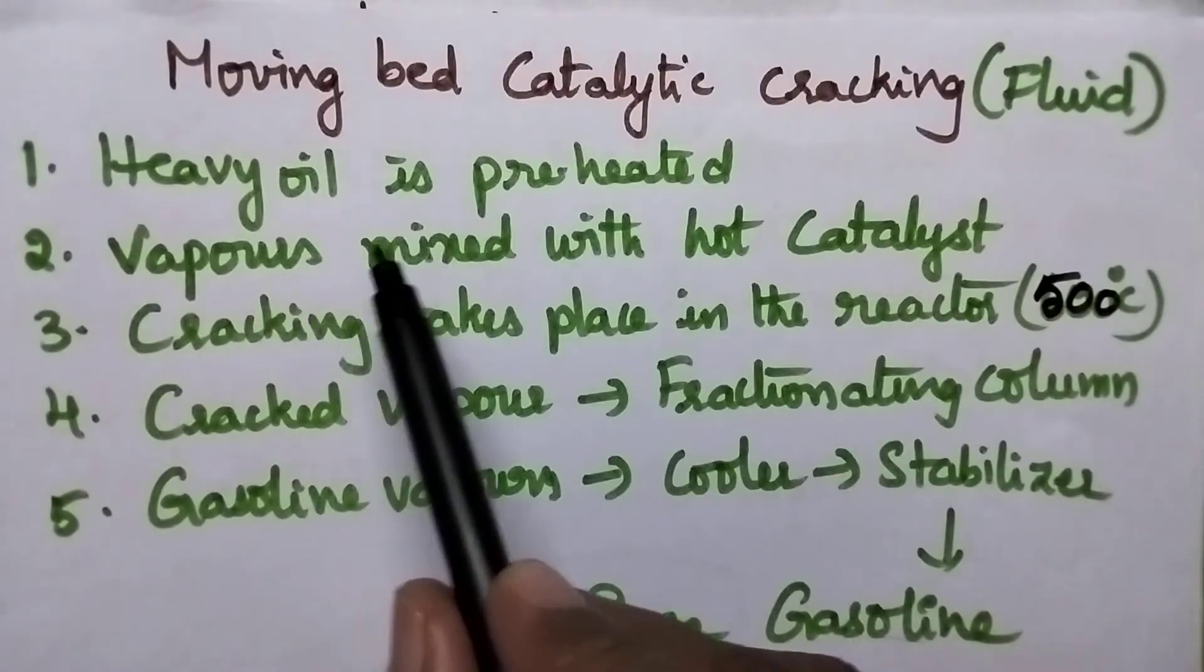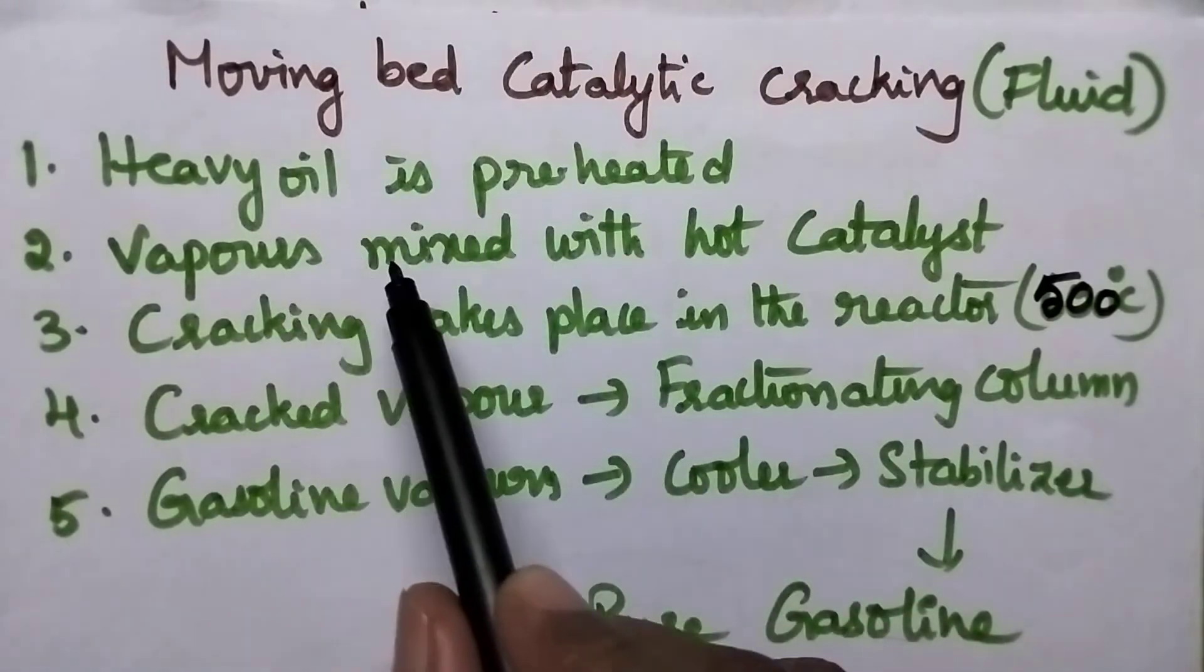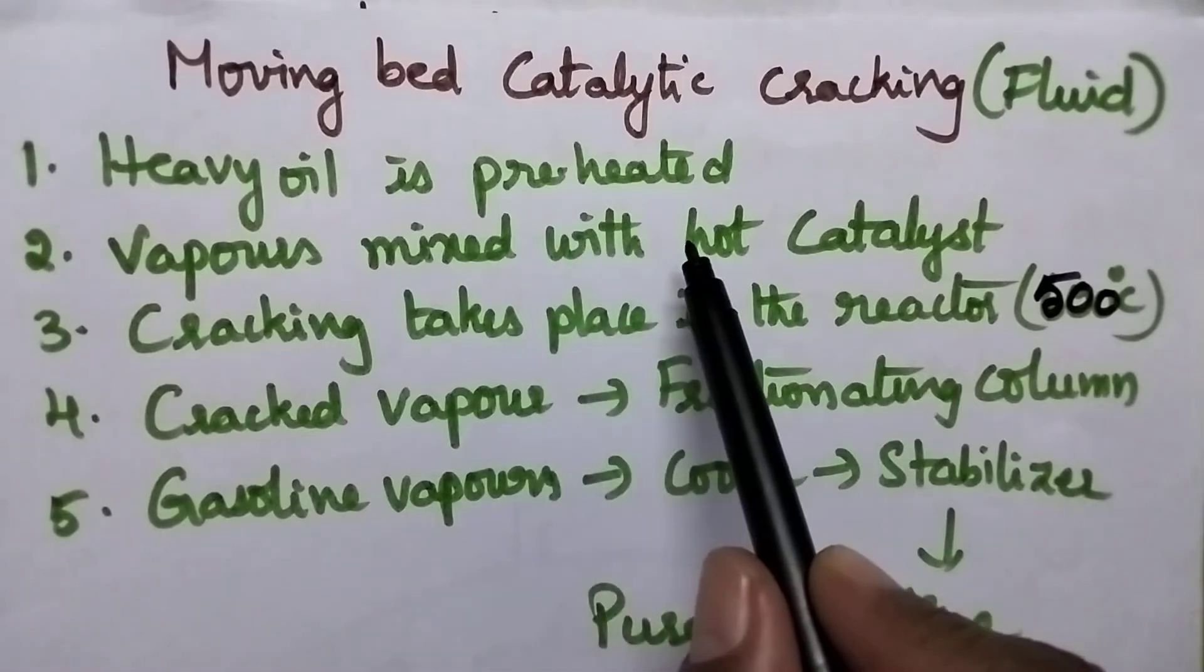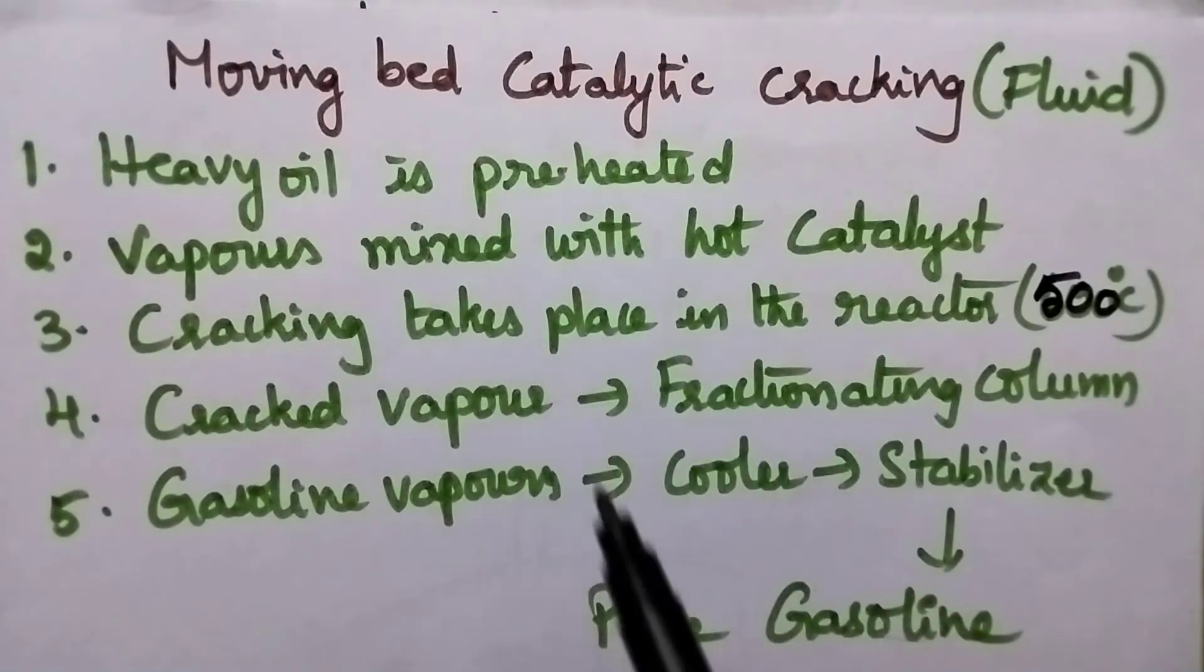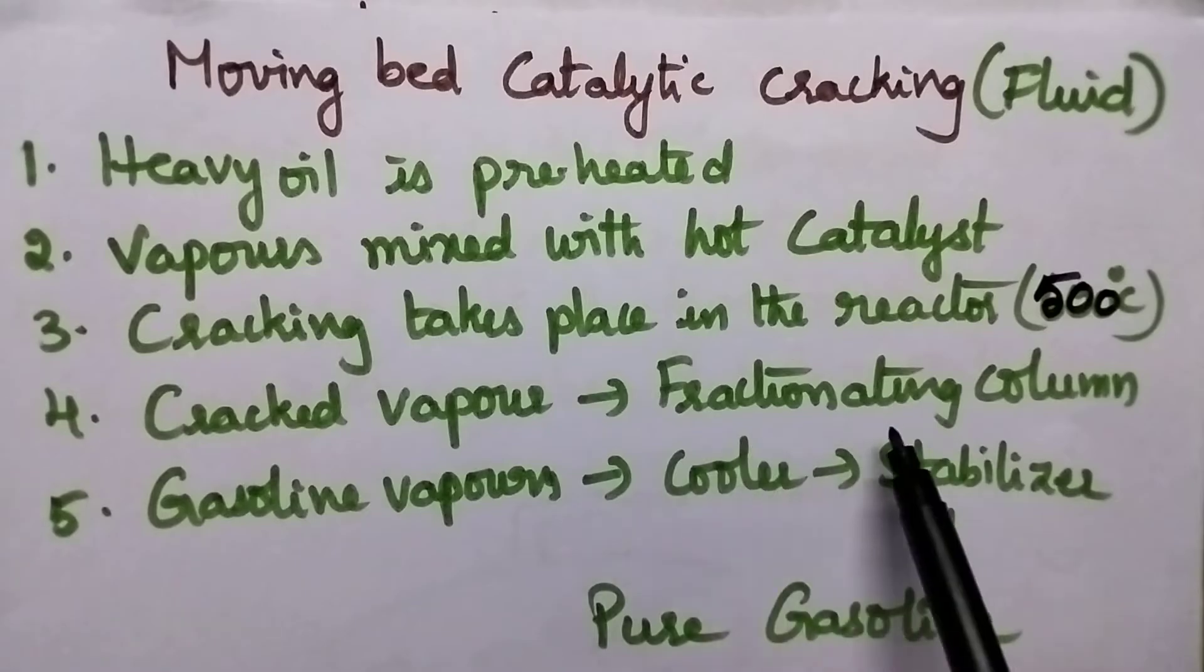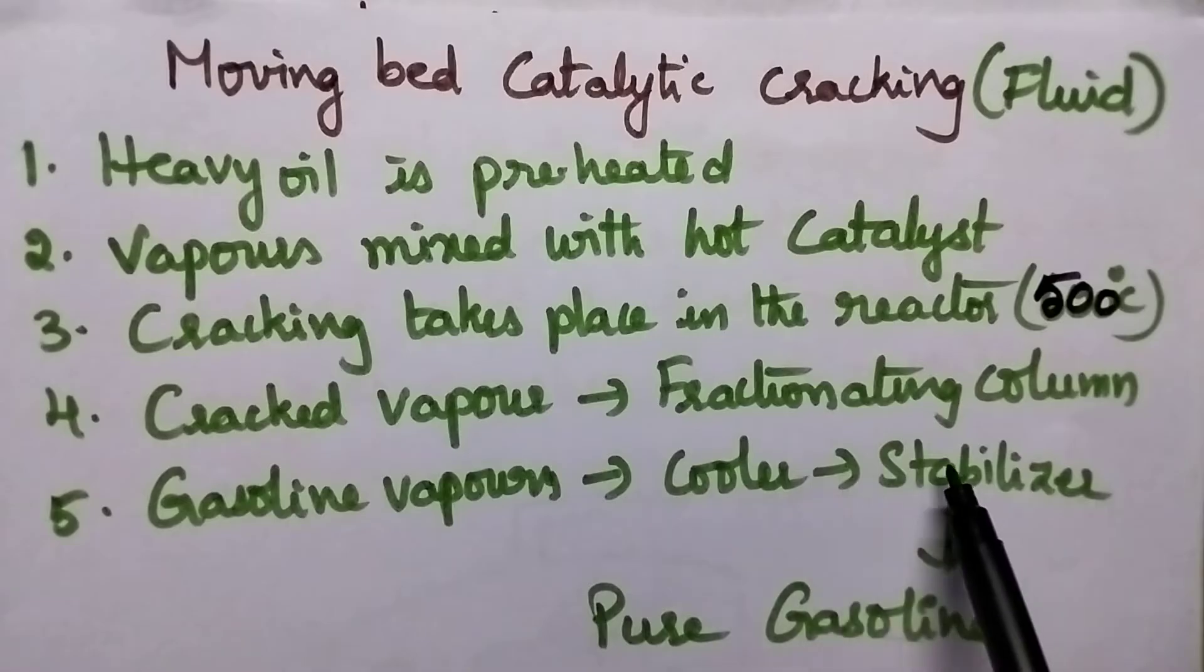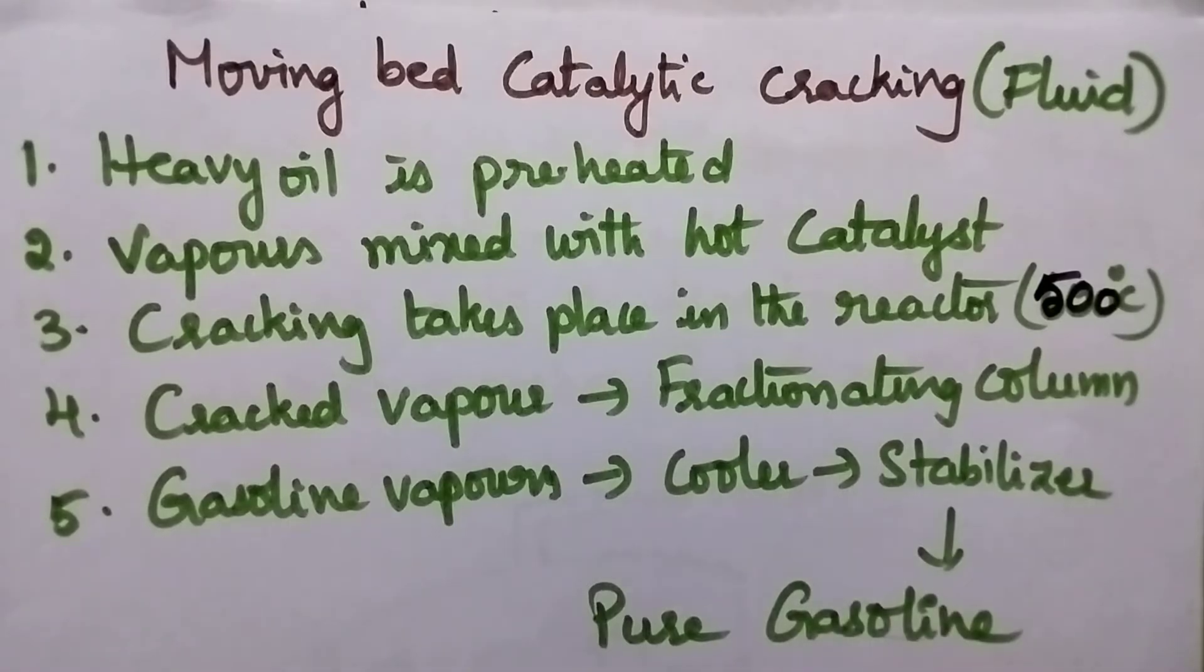Initially the heavy oil vapors are preheated and the vapors are passed through the catalyst chamber where cracking process takes place. The cracked vapors are then passed through the fractionating column. Then the gasoline vapors are passed through the cooler followed by stabilizer to get pure gasoline.